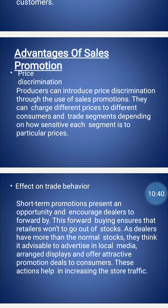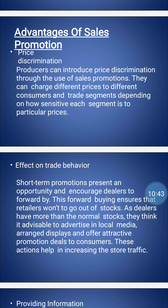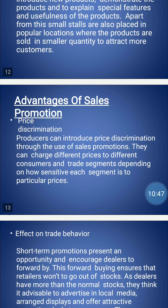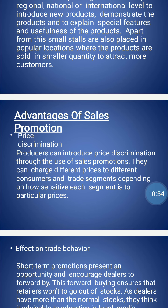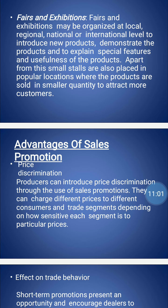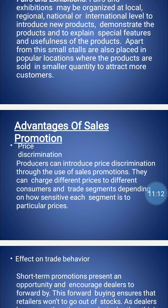The fifth step is creating desire. Sometimes the customer may hesitate to buy the product because of its high price. At this stage, the salesman has to eliminate the hesitations of the customer by describing the utility and quality of the product. These five steps — attracting attention, approaching the customer, awakening interest, convincing the customer, and creating desire — help promote or increase the sale of your product.